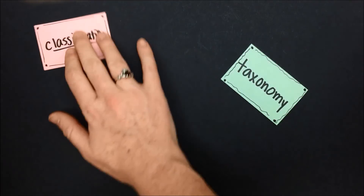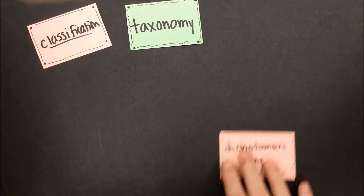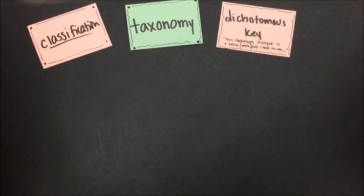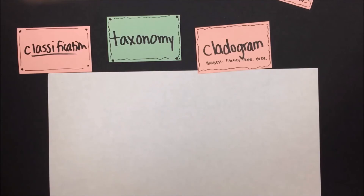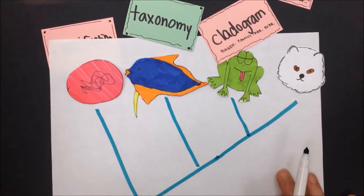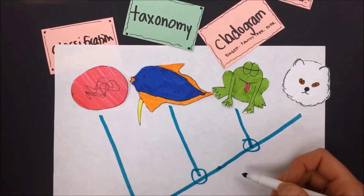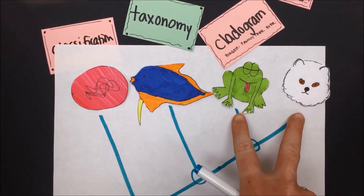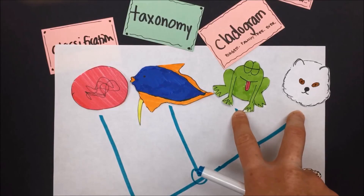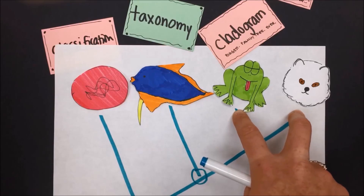A dichotomous key uses a series of paired statements or questions to narrow down possibilities and reach an identification of a certain organism. A cladogram is like a big family tree showing evolutionary history and relationships between species. Each vertex on a cladogram represents a common shared extinct ancestor between two species, and the closer together two organisms are, the more closely they are related and the more recently they evolved into different species.